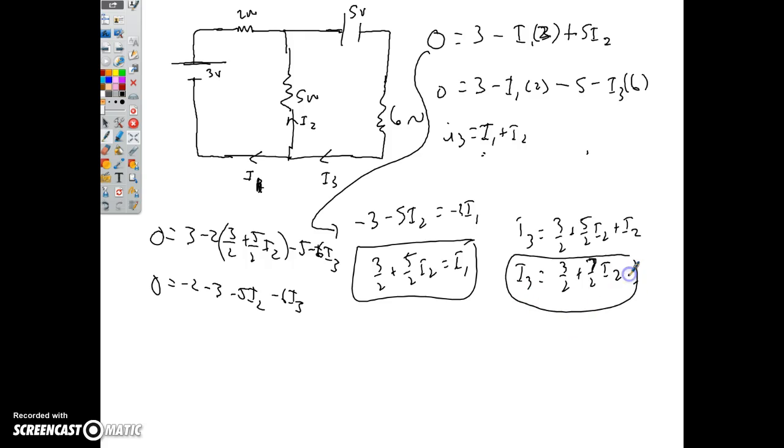All right, that was fun. I got to isolate another variable. I assume we're going to choose the seven halves one because that would make some sense. I3, oh okay, thank you. Plug it into here. I get negative five minus five I2 minus six times three halves plus seven halves I2. So I get zero equals negative five minus five I2 minus nine and then 21 I2. So that gives me 14, 15 equals negative 26 I2.